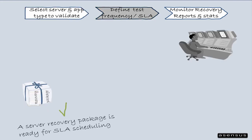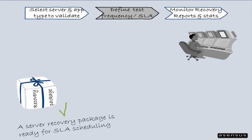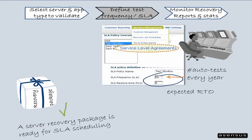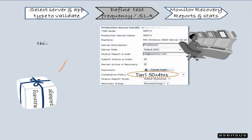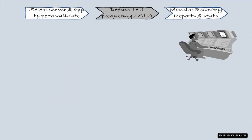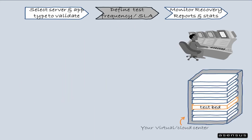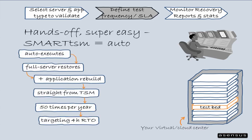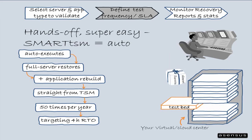We now have a package with the recovery configuration for this specific production server. Now SmartTSM automates future recovery tests via service level agreements. The SLA holds two factors: the frequency by which future recovery processes must execute automatically, and the expected recovery time for this specific production server.